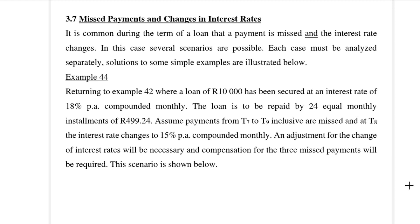And we're going to do that by way of looking at Example 44. Example 44 is a follow-up from Examples 42 and 43. In Example 42, we looked at missed payments. In Example 43, we looked at changes in interest rate. And now we're going to do both of them simultaneously. So again, we've got a loan of 10,000 Rands at an interest rate of 18% per annum compounded monthly. And then it is to be repaid in 24 equal monthly installments.